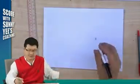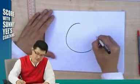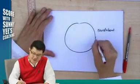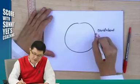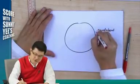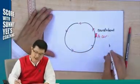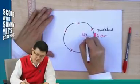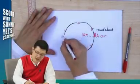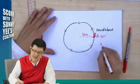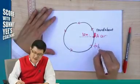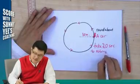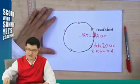Let me give you one more example. Say there is a roundabout, and there is a car starting from a point A. The car moves around the roundabout, which has a radius of 30 meters, going one full circle and returning to its starting position. It takes 20 seconds to return to A again.